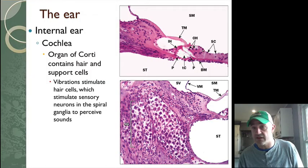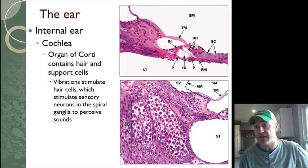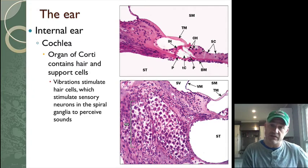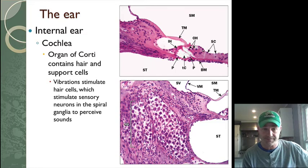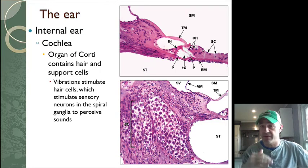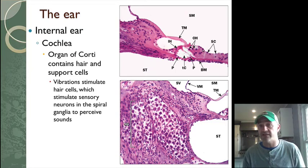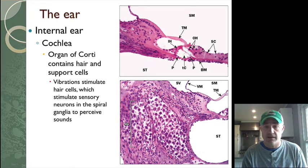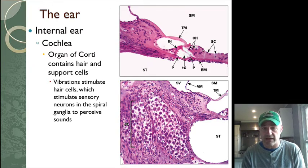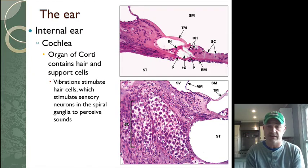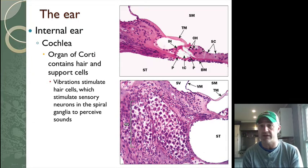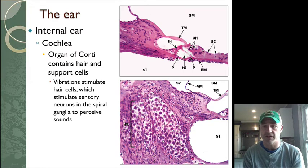Zoomed in on the real image, you can see the TM is the tectorial membrane, OH are the outer hair cells, and IH are the inner hair cells. It's the basilar membrane pushing these hair cells up into the tectorial membrane that triggers the sound response. The spiral ganglion cells are visible as well. The key structures to identify are: tectorial membrane, inner and outer hair cells, basilar membrane, scala vestibuli, and scala tympani.